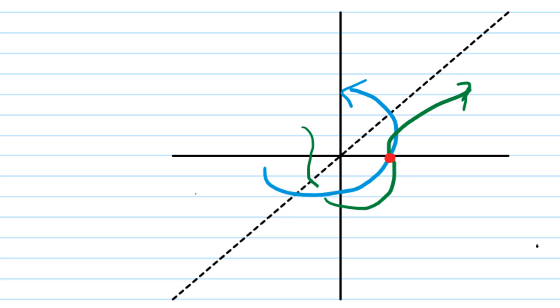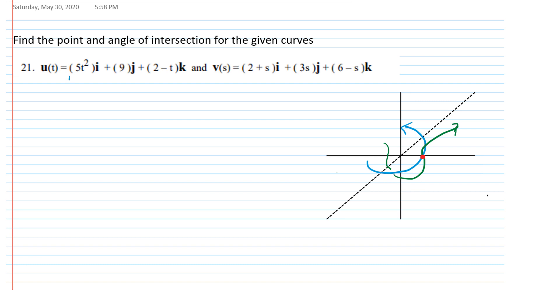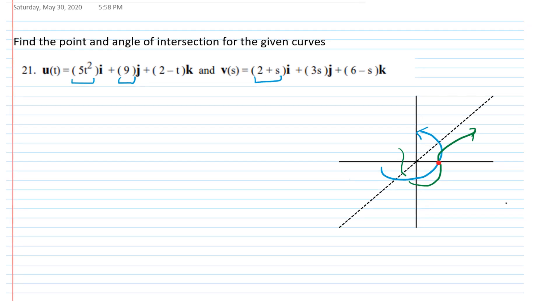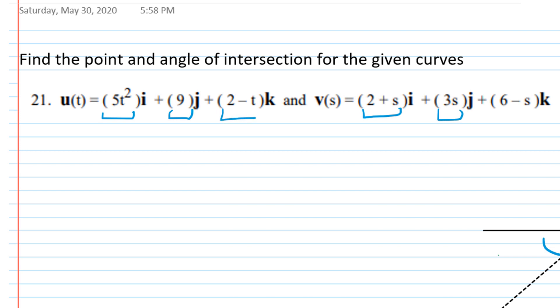So first thing we need to do is find that point of intersection. And so what we're going to do is say, well, we need the i component to be equal to the i component, the j component to be equal to the j component, and the k component to be equal to the k component. So essentially we have a system of equations to solve. We want 5t squared to be equal to 2 plus s, we want 9 to be equal to 3s, and we want 2 minus t to be equal to 6 minus s.